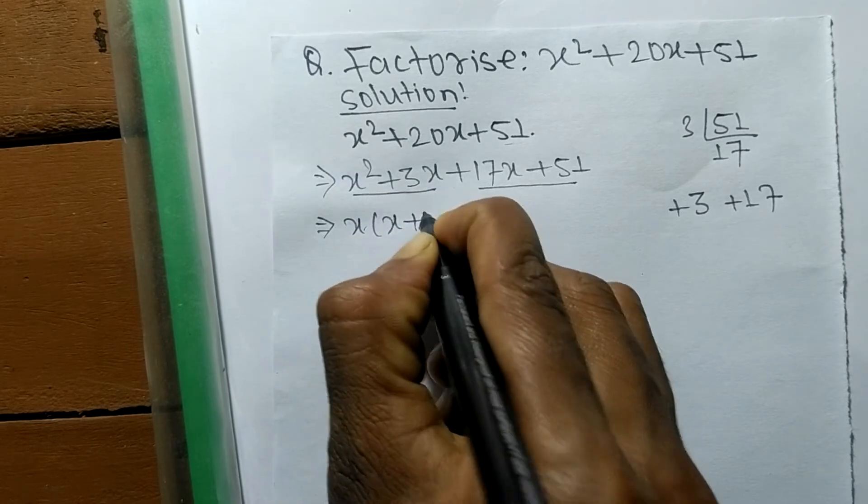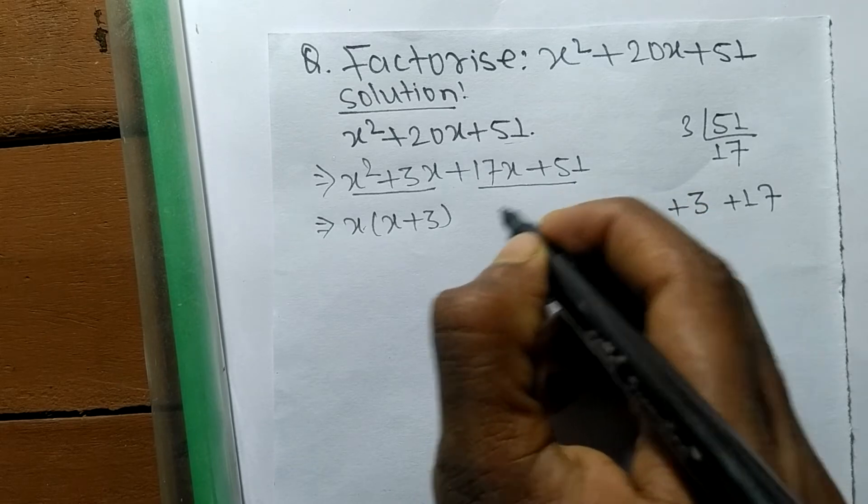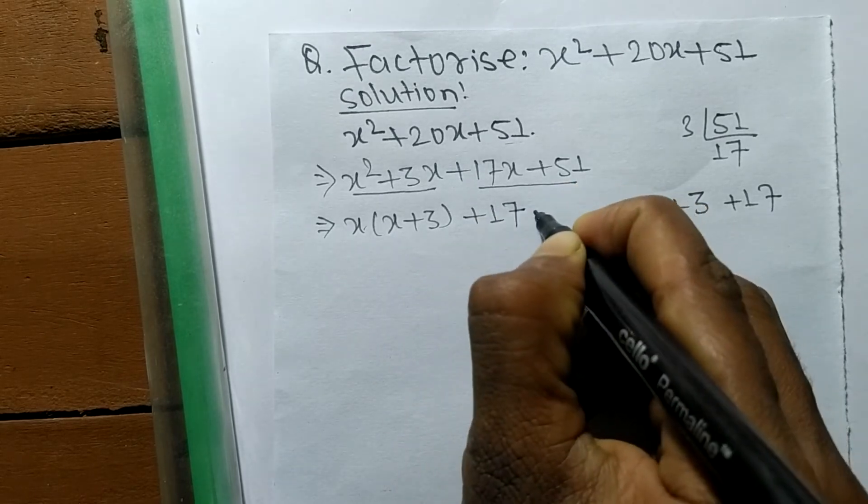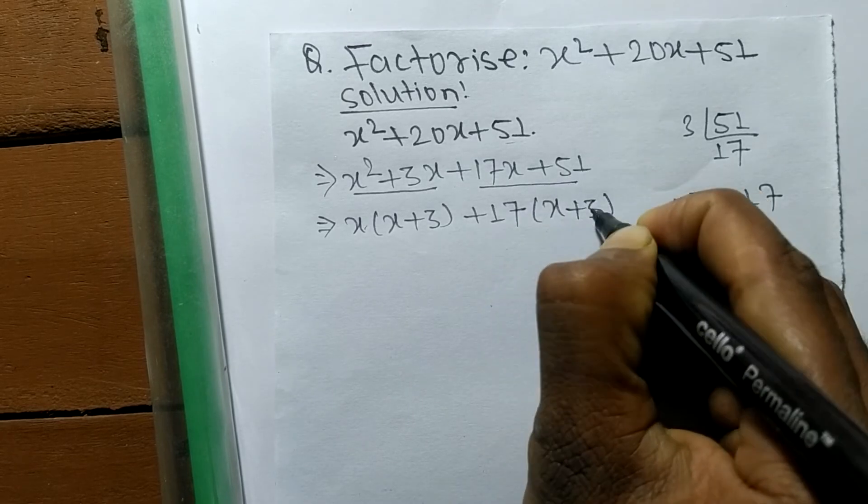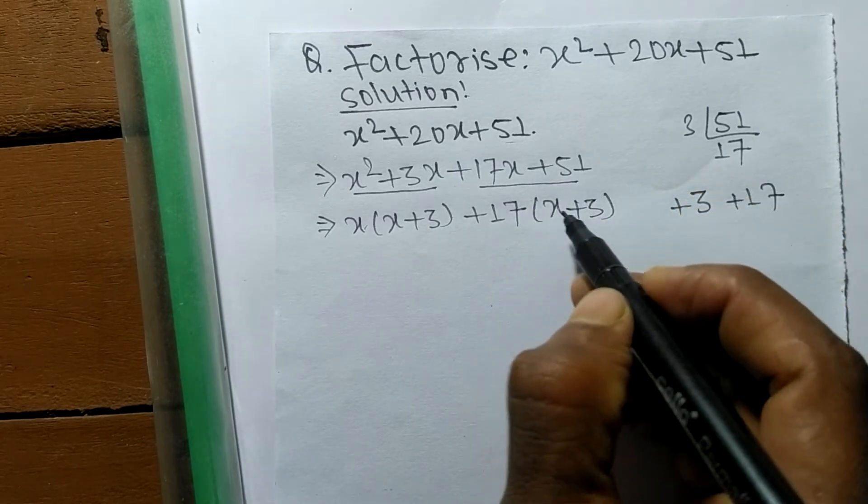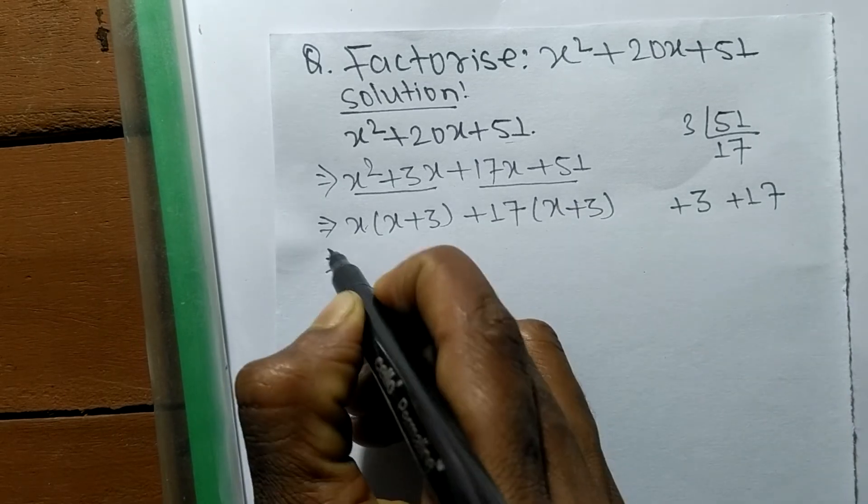In the same way, the common in the second pair is 17, so the remaining is x + 3. We got the common in both the pairs.